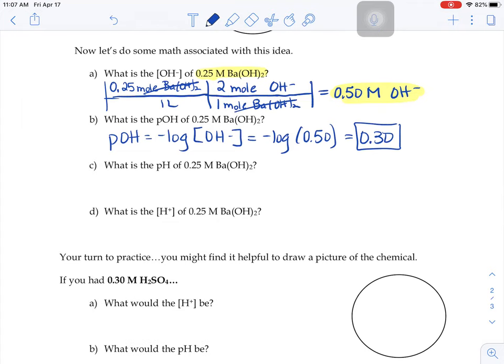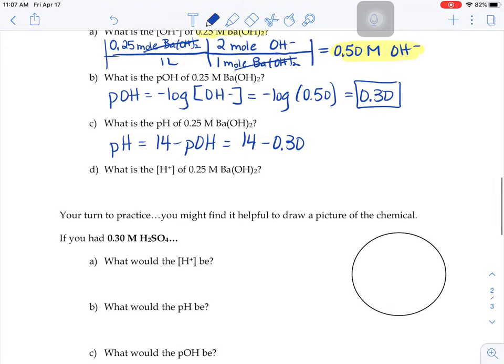If we want to know the pH of that barium hydroxide, pH and pOH always add up to 14. So if we do 14 minus 0.3, we'll get the pH of our solution, 13.7.